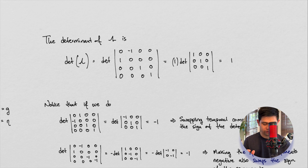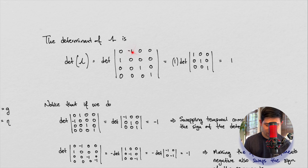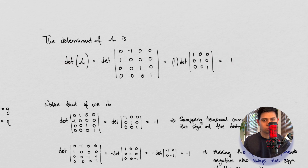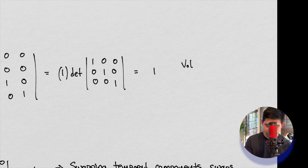The determinant of the matrix that we found to preserve the metric is actually equal to one. You can see that here — the negative entry becomes positive one when you account for the sign alternation across rows and columns in the determinant calculation. We then take the determinant of those columns combined and get one. So the determinant of the transformation is one. This is what's meant by volume preserving.